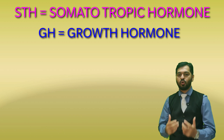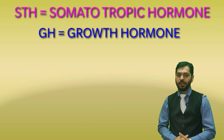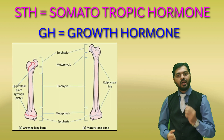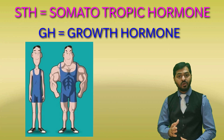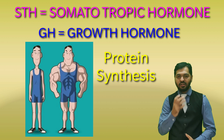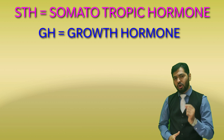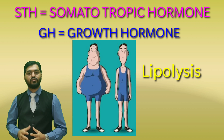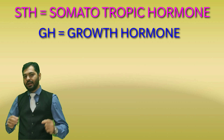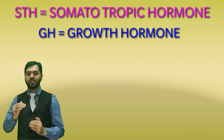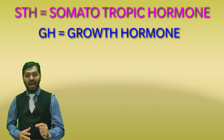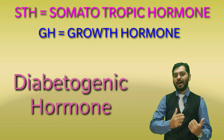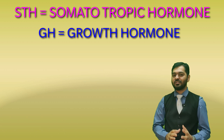Growth Hormone promotes growth of the entire body, and specifically it helps increase the length of long bones by greater uptake of calcium. It also helps increase muscle size and promotes protein synthesis — these are all anabolic events promoted by Growth Hormone. Additionally, Growth Hormone promotes lipolysis, the breakdown of lipids, resulting in formation of fatty acids, so it is a lipolytic hormone. Growth Hormone also increases glucose levels in the blood, which is why it is called a Diabetogenic Hormone — it is not causing diabetes, but it creates a diabetes-like situation where blood glucose levels rise.